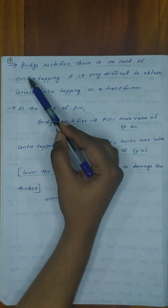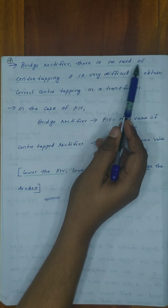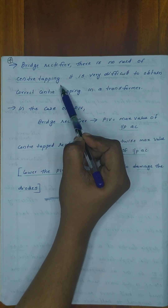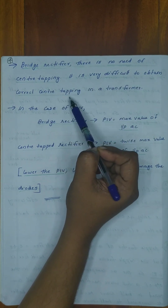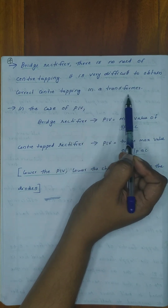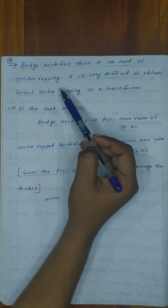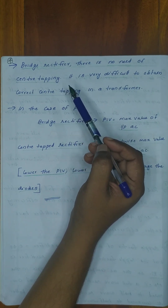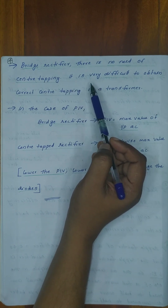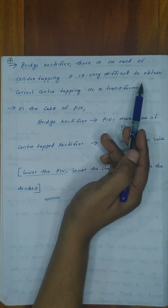The fourth advantage: in a bridge rectifier, there is no need for center tapping. It is very difficult to obtain correct center tapping in a transformer. In the case of a bridge rectifier, we use a standard transformer, so we do not need to worry about obtaining correct center tapping.